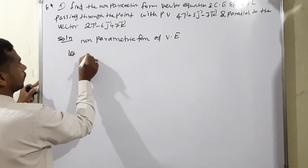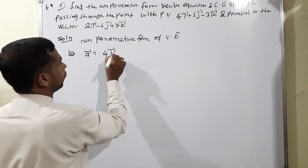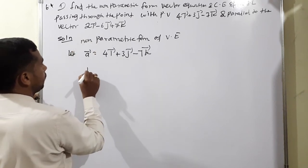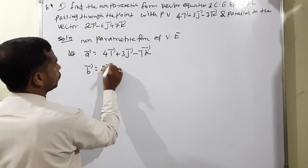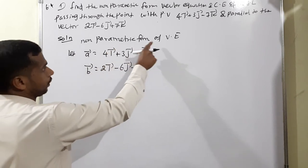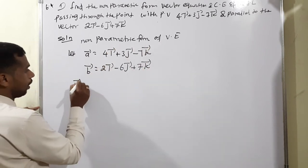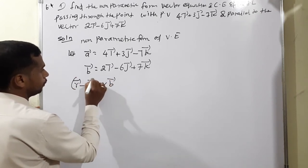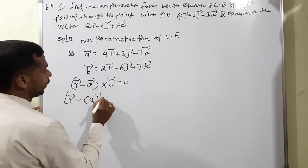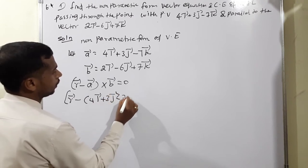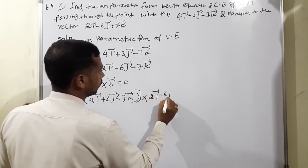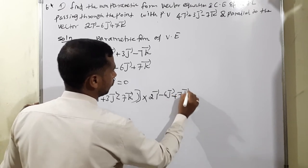Solution. Let a vector equals 4i plus 3j minus 7k, and b vector equals 2i minus 6j plus 7k. The non-parametric form of vector equation formula is: (r minus a) cross b equals 0. So (r minus (4i plus 3j minus 7k)) cross (2i minus 6j plus 7k) equals 0.